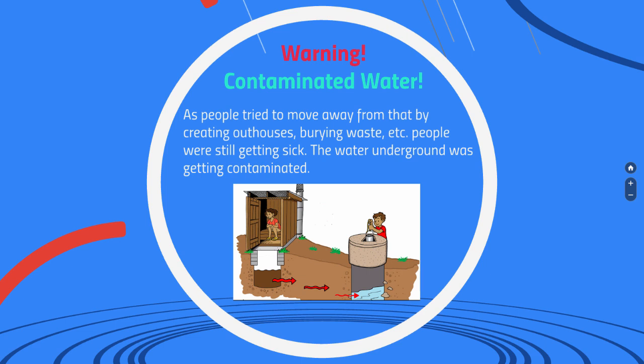But people were still getting sick and weren't sure why. Here's what was happening: water doesn't just flow on top of the ground — it also flows underneath, moving through all the porous material and tiny holes and crevices. So as water traveled underground, it passed through whatever was buried, including outhouse waste, and it was still getting into the well. A well is just a deep hole dug into the ground until it reaches water, and that well water was what people used for drinking. The water that flowed through the ground past the outhouse was getting into their drinking water.